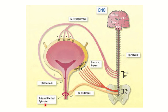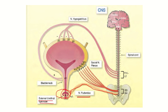Some fibers from sacral 2, 3, and 4 form the pudendal nerve, which goes to the external urethral sphincter — and that is exactly what the question is asking about. We can see the external urethral sphincter here, and it is supplied by the pudendal nerve. So we need to find the root value of the pudendal nerve.